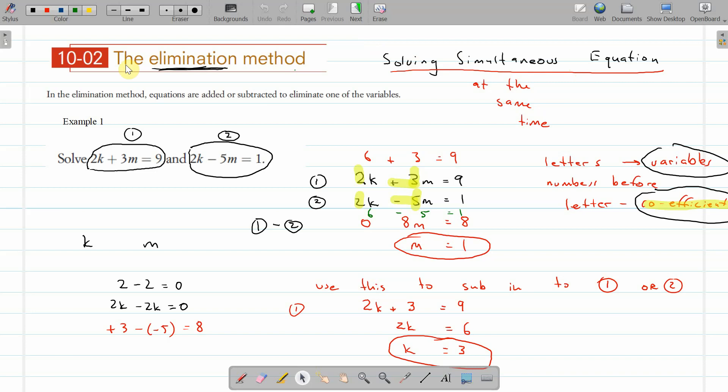The first one we looked at, we found that it comes down to what are the variables and what are the coefficients. Remember the variables in this example here was k and m, and then I've highlighted the coefficients, the numbers before the variables. And we found that when the coefficients are the same, with the same variable, we subtract.